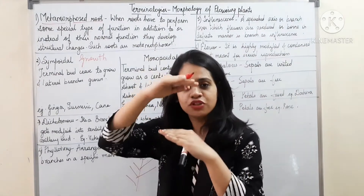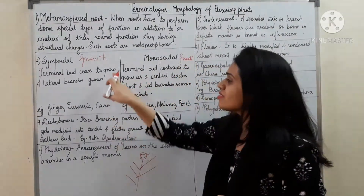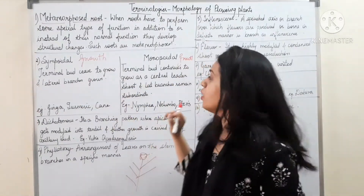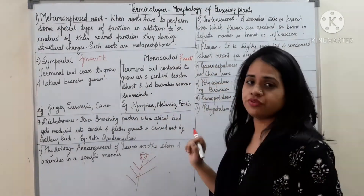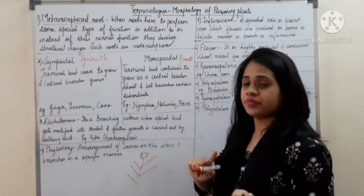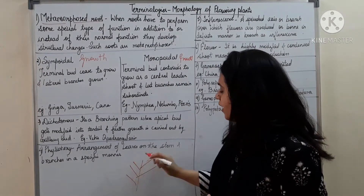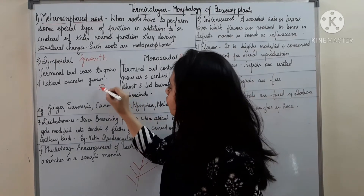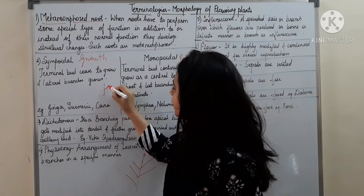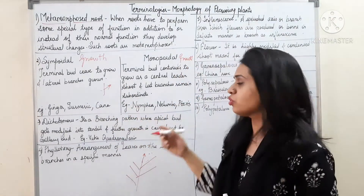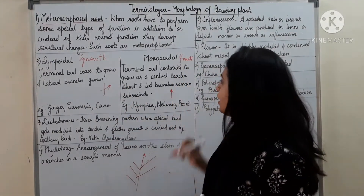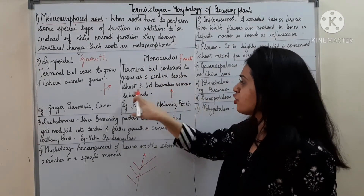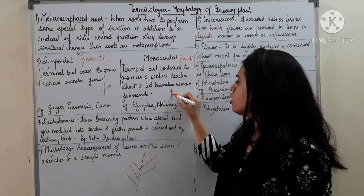Sympodial means the terminal bud — the upper bud — will cease to grow, it will stop growing, and the lateral branches will grow. Next comes monopodial growth, which is the opposite. In monopodial growth, the terminal bud starts growing. The terminal part continues to grow as a central leader shoot and lateral branches remain subordinate.